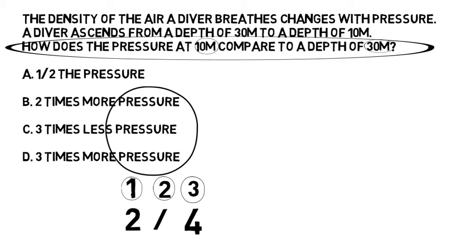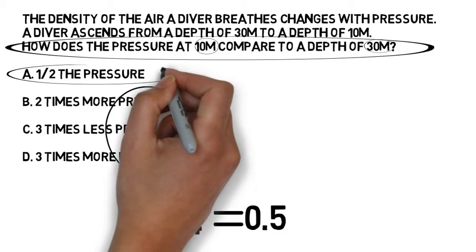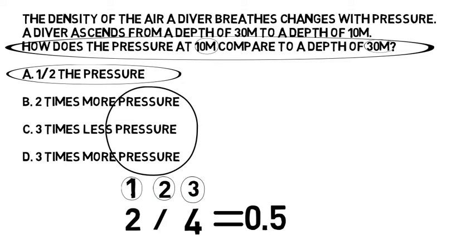I now have my calculation. Two divided by four equals 0.5. Well, 0.5, put another way, is one half. Is the pressure at 10 meters half what it is at 30 meters? Sounds about right. Let's look at our answers. Answer A is half the pressure. It's not going to be more pressure, so it's certainly not B.